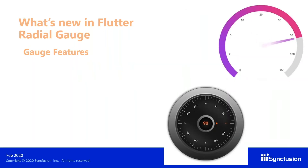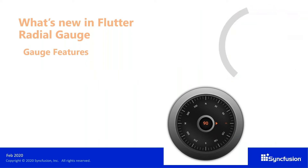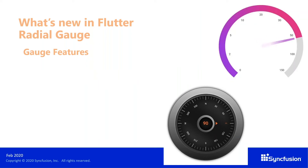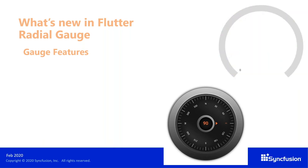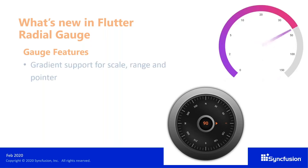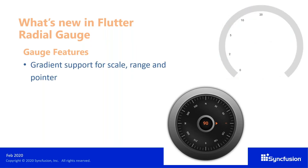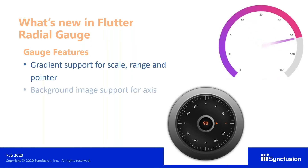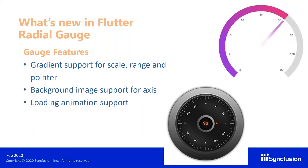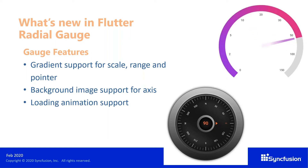The next set of features I'd like to talk about are from the gauges. We have added new customization options like gradient support for scale and pointers. You can add a background image for the axis. And now you have animation while loading the gauge — this is the loading animation that we have provided for our Radial Flutter gauge.